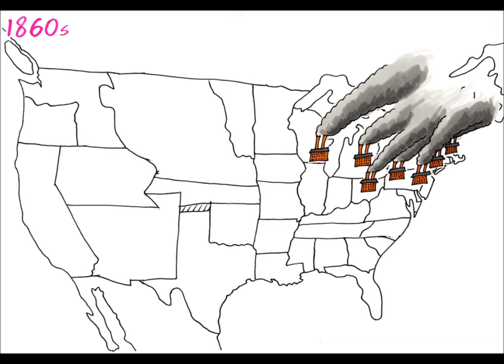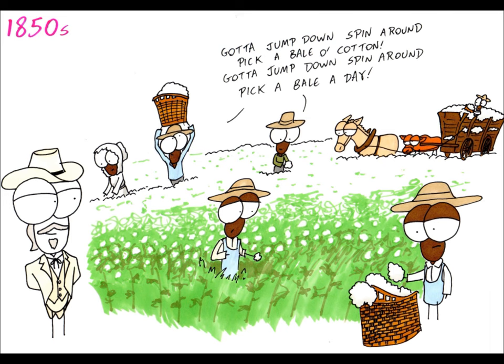The northern states had become more industrialised and people worked on a basis of free labour, being paid to work by an employer. The southern states hadn't industrialised, relying on agriculture, the slave trade and the cotton industry for the economy.